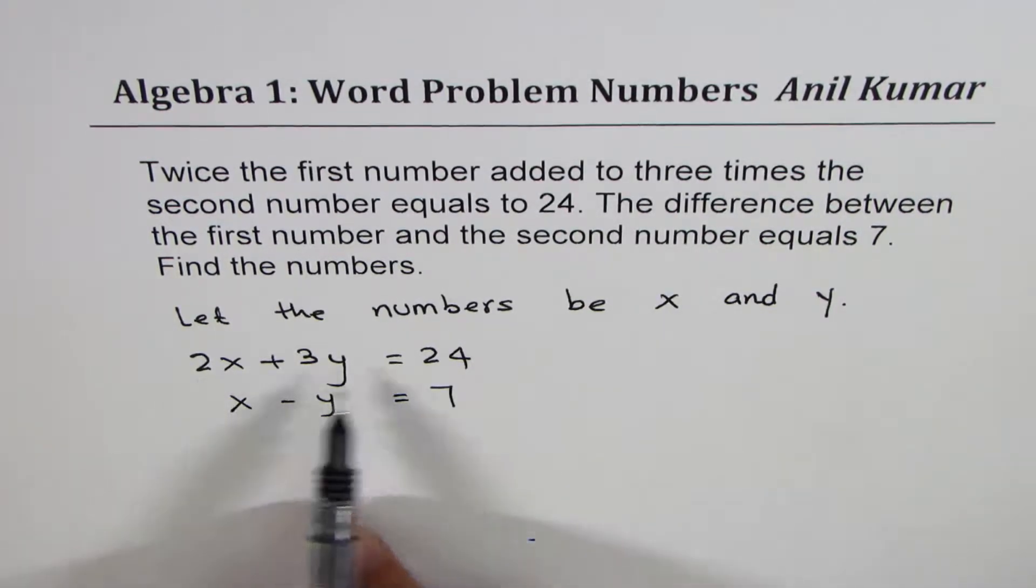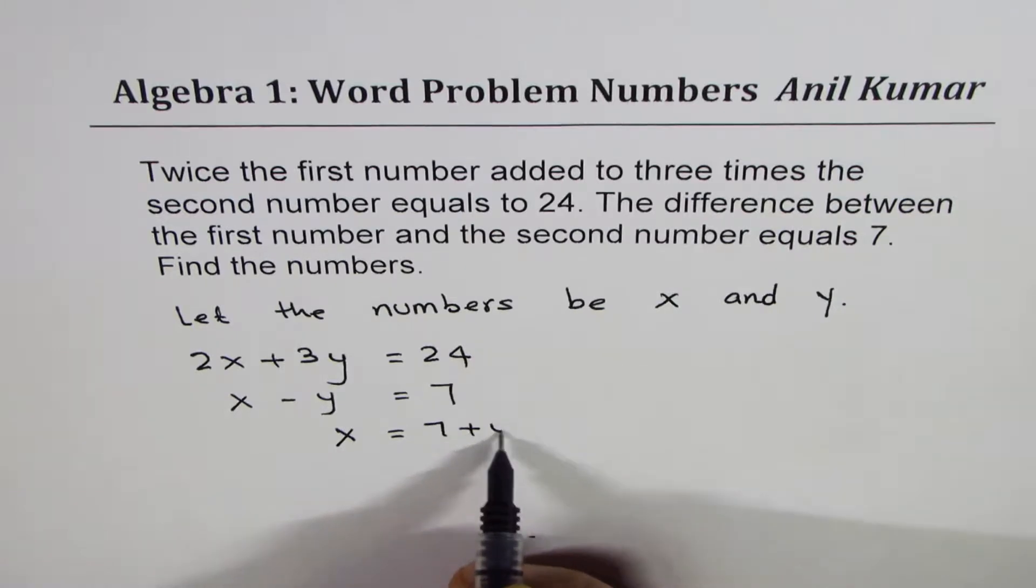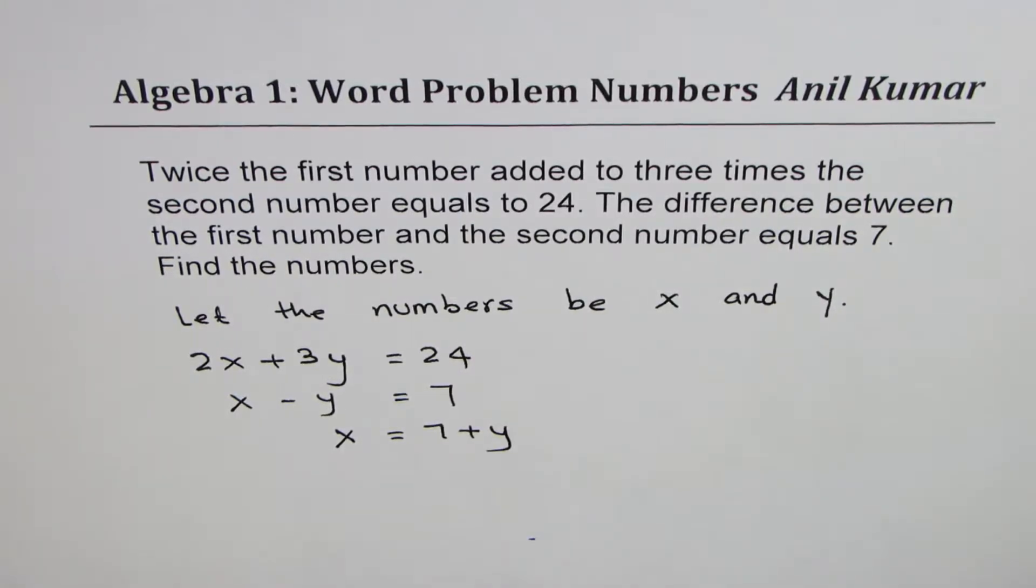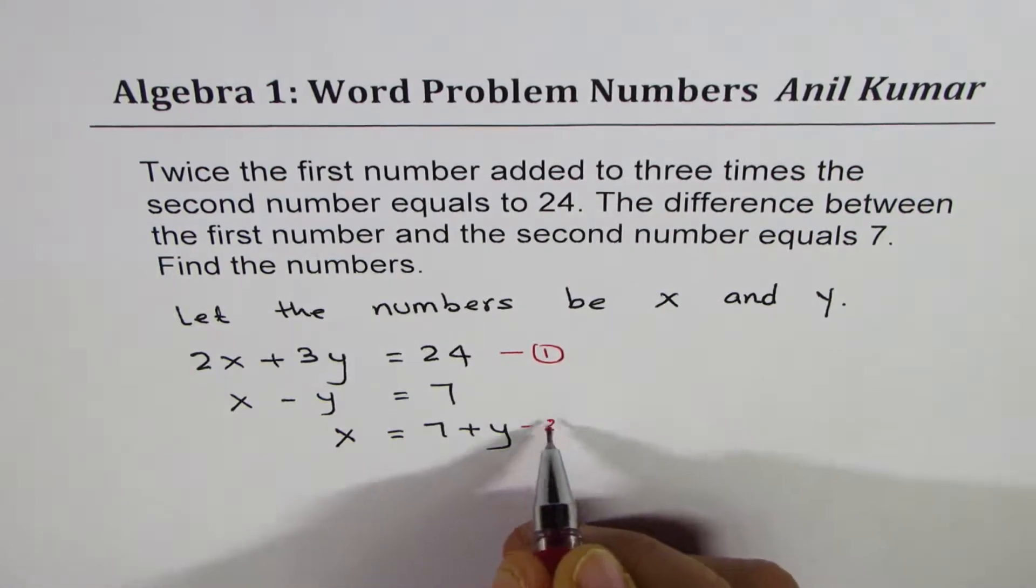So we get two equations, two unknowns. We can easily solve it. Now at this stage there are many ways to solve, mainly two methods: elimination or substitution. We'll prefer to isolate x. x minus y equals to seven, we could write x equals to seven plus y. So we'll call our equation number one as this and this is the second modified equation.